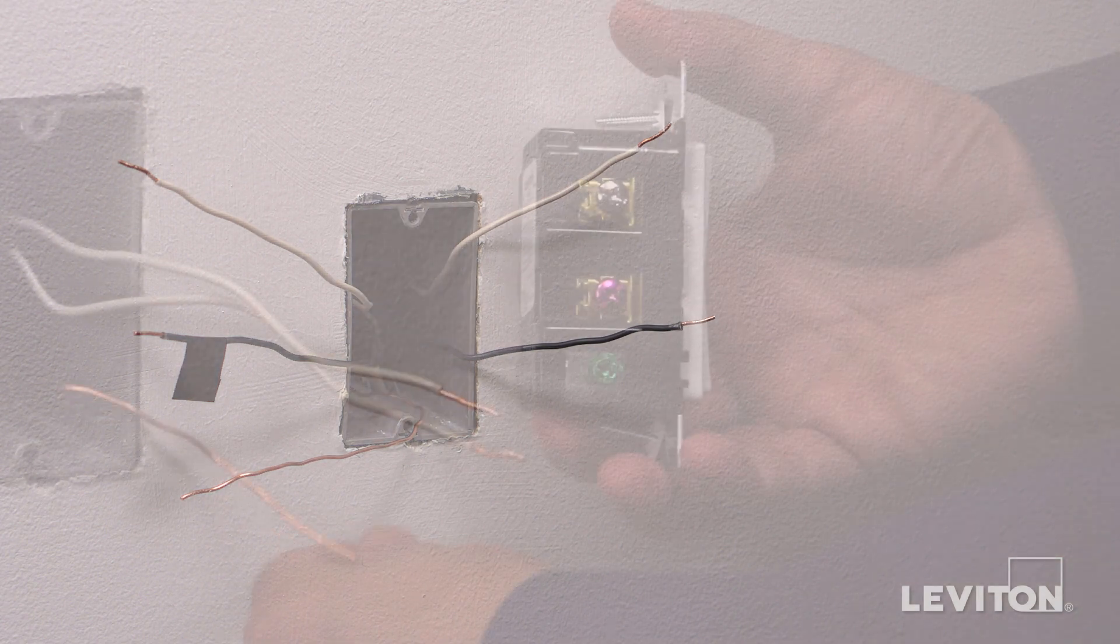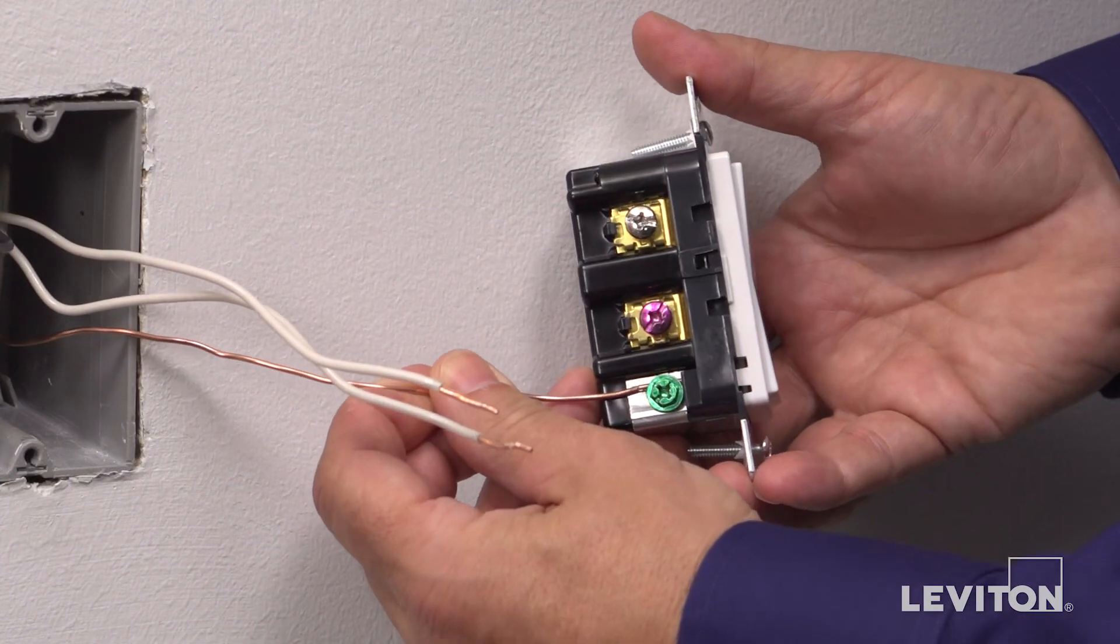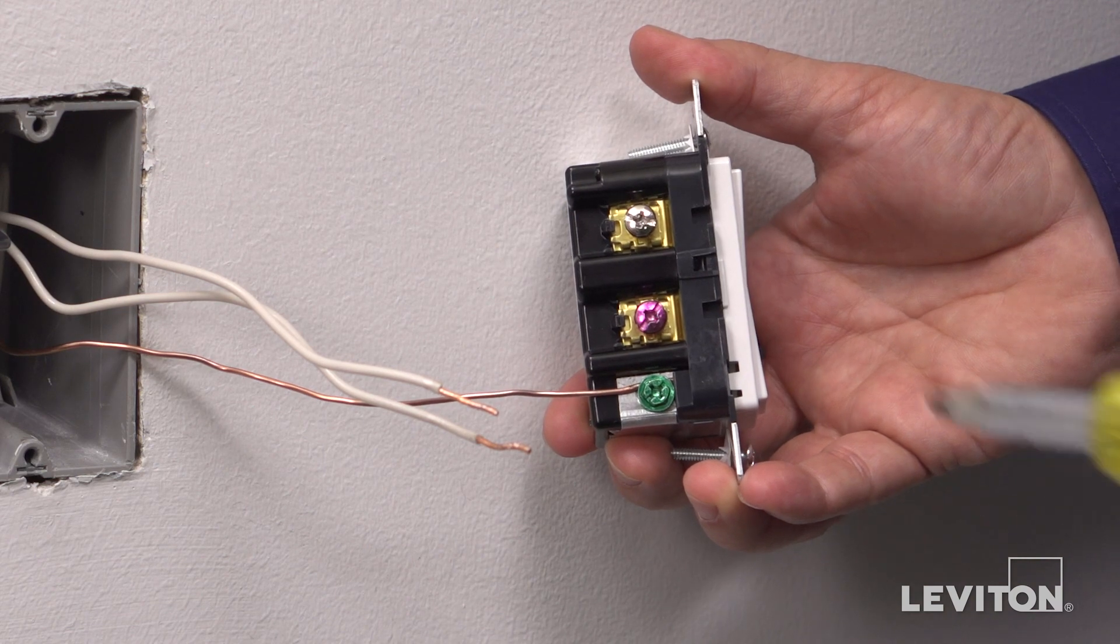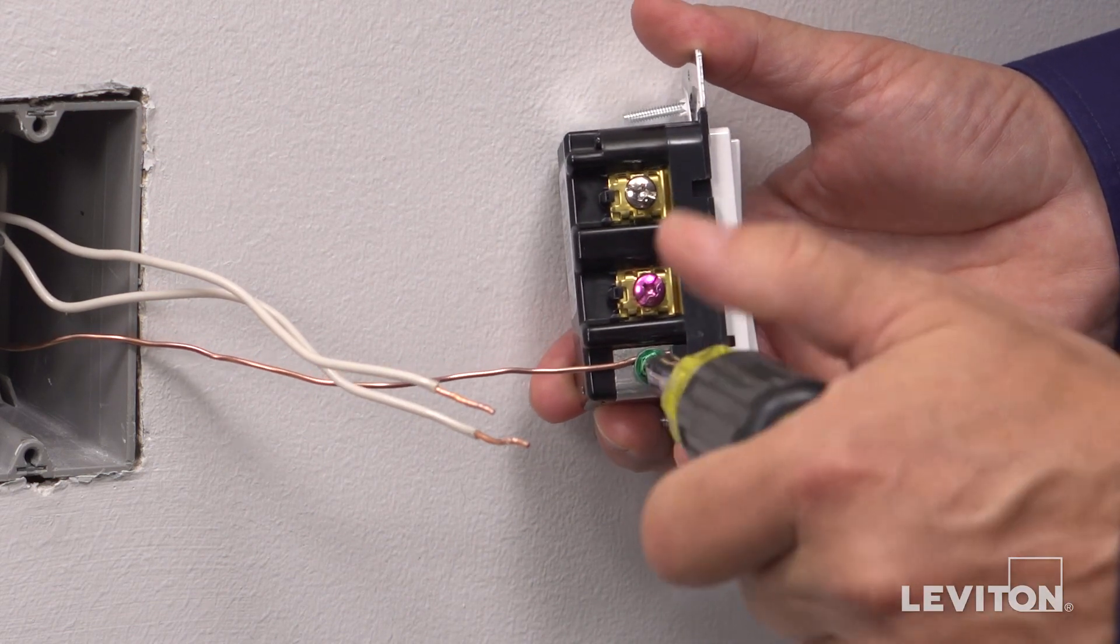To start, take the copper or ground wire and feed it under the clamp of the green terminal screw and tighten the screw to secure.